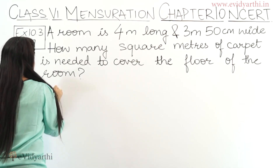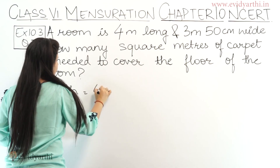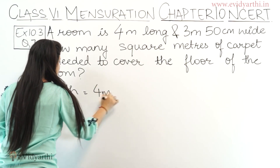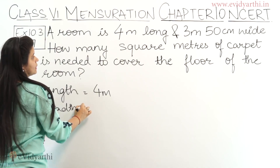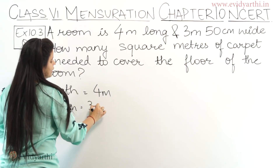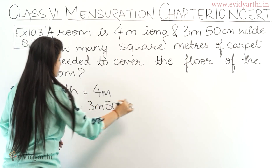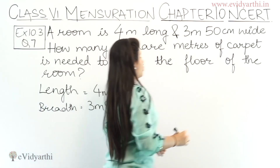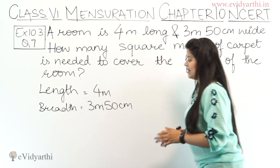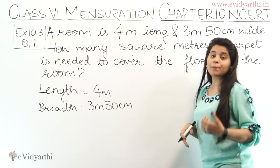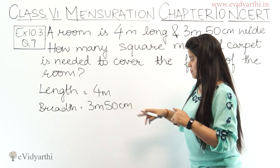We are given the length — haame given hai 4 meters. Breadth is also given, so breadth haame given hai 3 meters 50 centimeters. Ab yahaan pe ye breadth given hai 3 meter 50 centimeters — isko aapko convert karna padega meters mein.